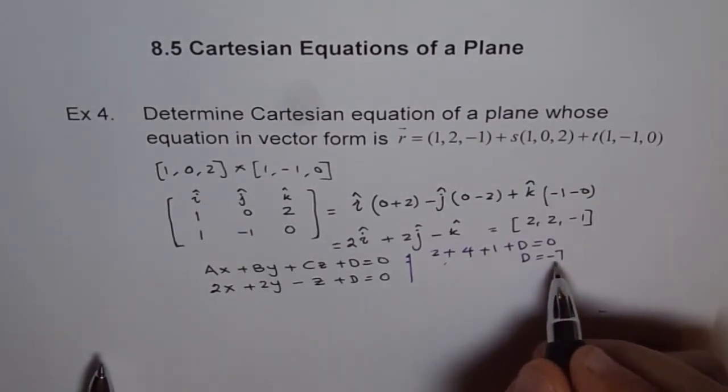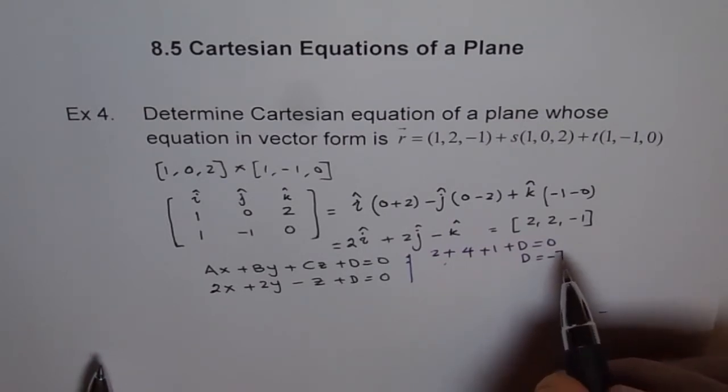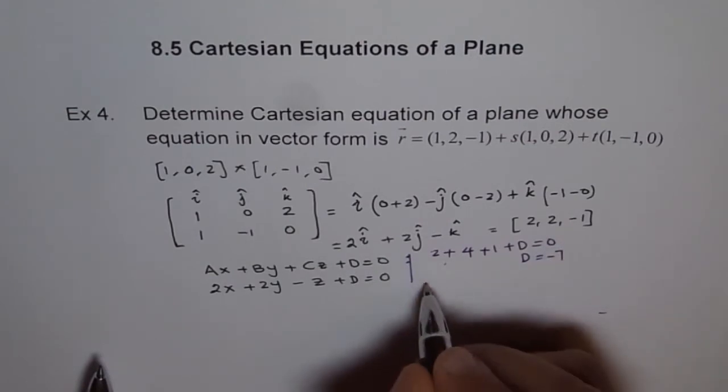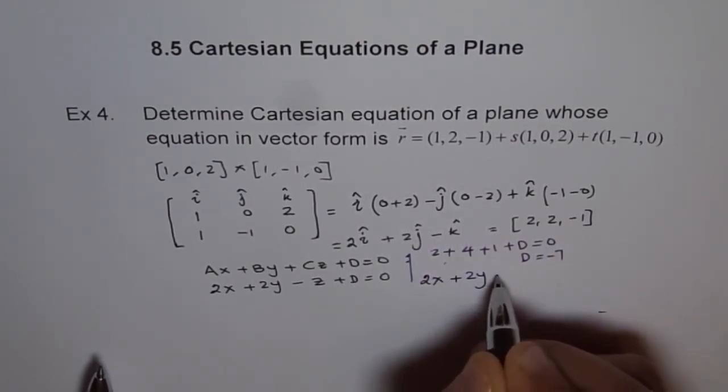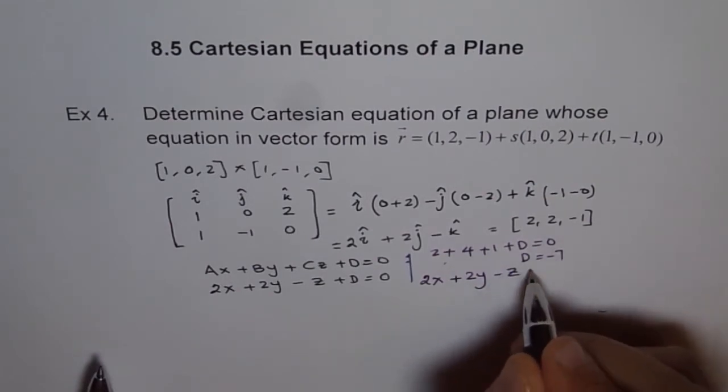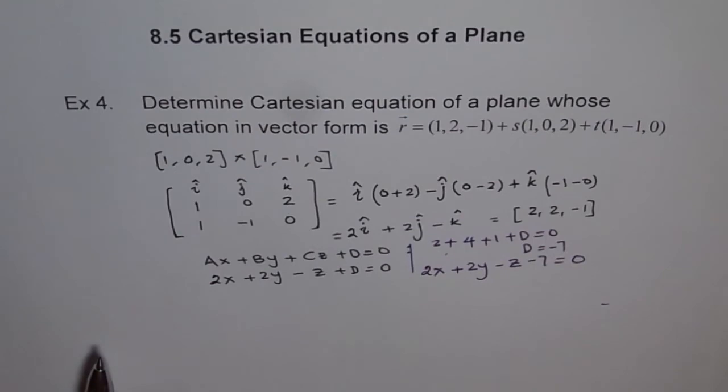Since D is minus 7, we can plug it here and get this equation of our plane. Therefore, this scalar equation or the Cartesian equation will be 2X plus 2Y minus Z minus 7 equals to 0. That is our solution.